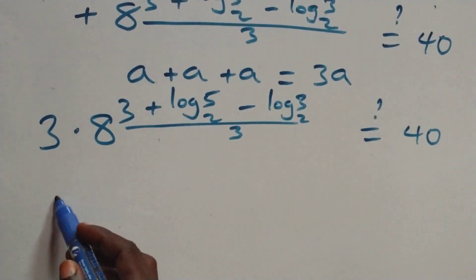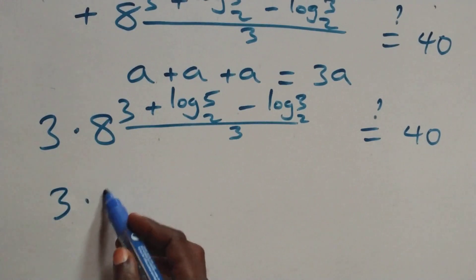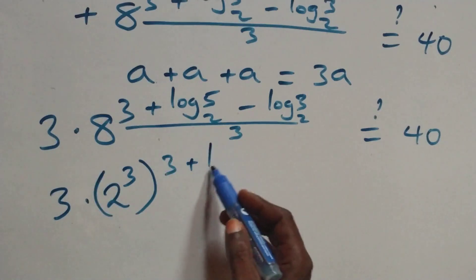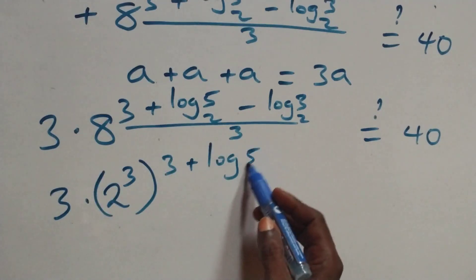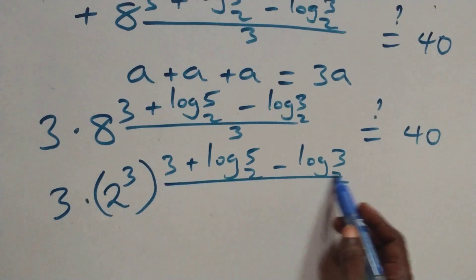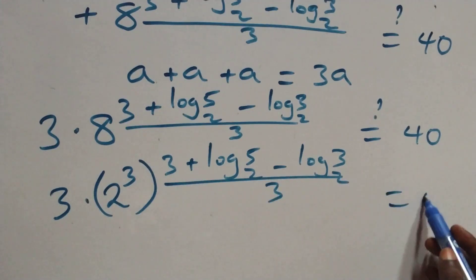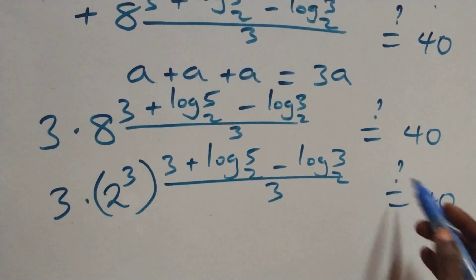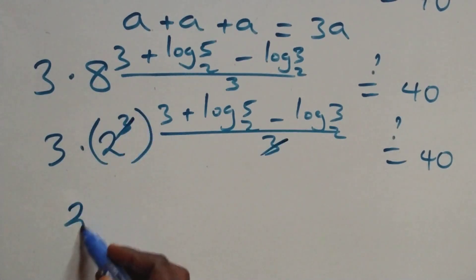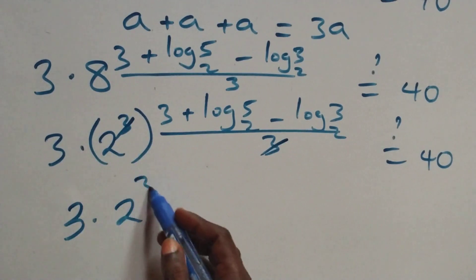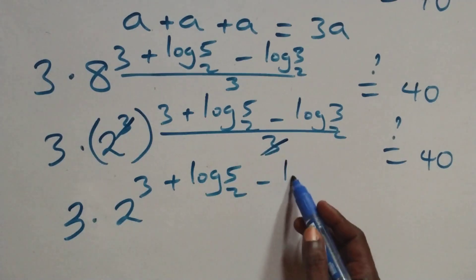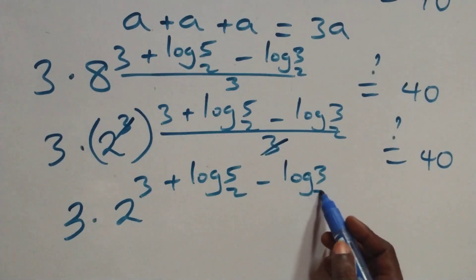It can be written as 2 cubed, and we have 3 times 2 cubed, raised to the power 3 plus log 5 base 2 minus log 3 base 2, all over 3. This power multiplies 3, and they cancel each other. We have 3 times 2 raised to the power 3 plus log 5 base 2 minus log 3 base 2. Is it equals to 40 on this side?